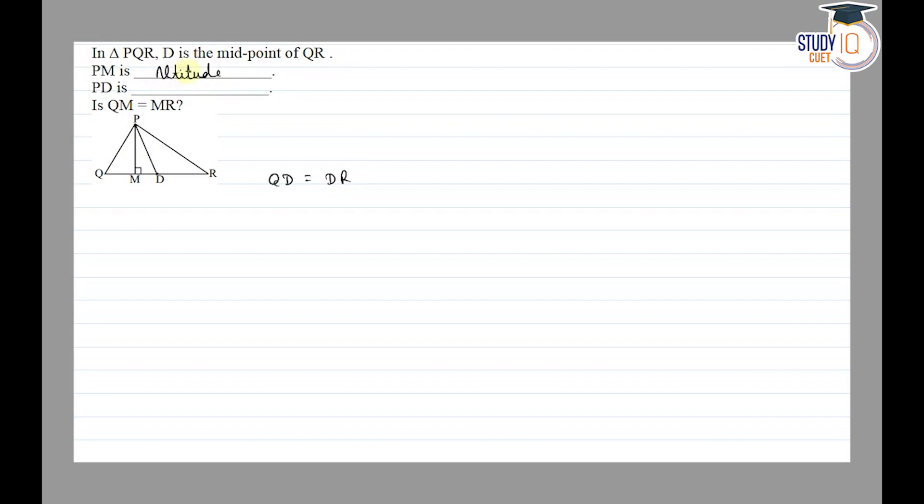And PD is the median. Since D is the midpoint of QR, the line drawn from vertex P to the opposite side that divides the opposite side into two equal parts is called the median.